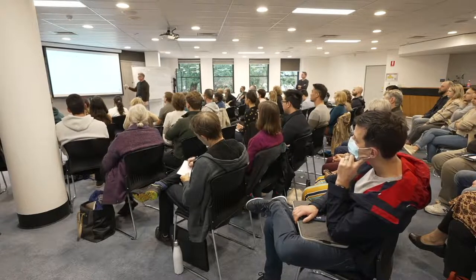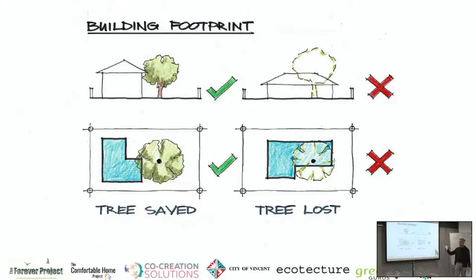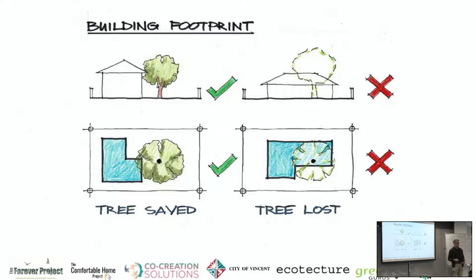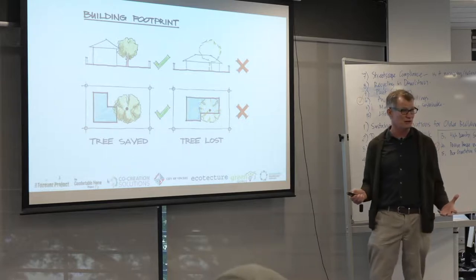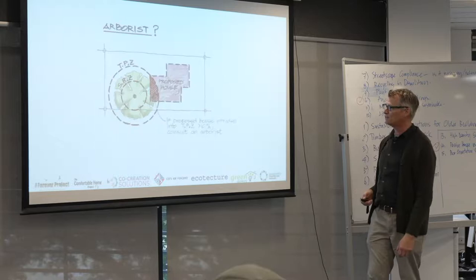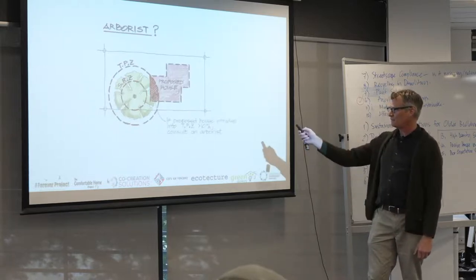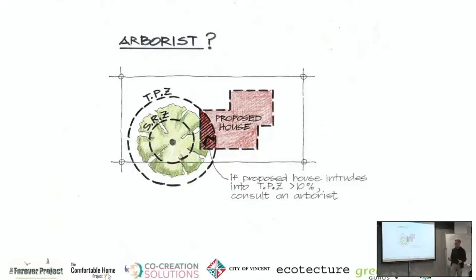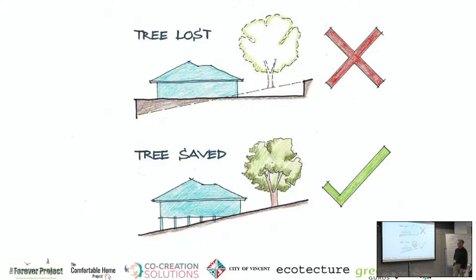Think about your building footprint — maybe a two-story smaller home rather than a larger single-story home could save a tree. There's a cost implication, but trees are valued in the tens of thousands of dollars — potentially up to eighty thousand dollars for a 50-to-60-year-old tree. If more than 10% of the proposed building is within the tree protection zone, consulting an arborist is absolutely recommended.